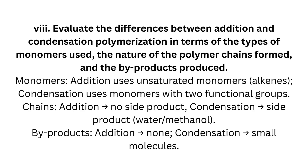Long answer Question 8: Evaluate the differences between addition and condensation polymerization in terms of the types of monomers used, the nature of the polymer chains formed, and the byproducts produced. Monomers: addition uses unsaturated monomers (alkenes); condensation uses monomers with two functional groups. Chains: addition produces no side product; condensation produces a side product (water/methanol). Byproducts: addition — none; condensation — small molecules.